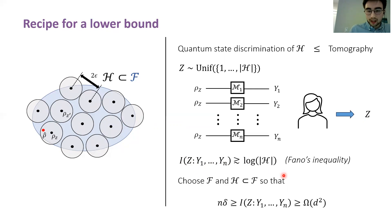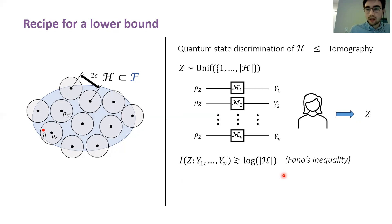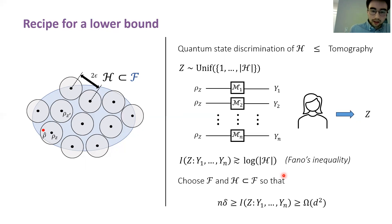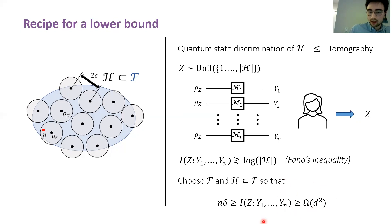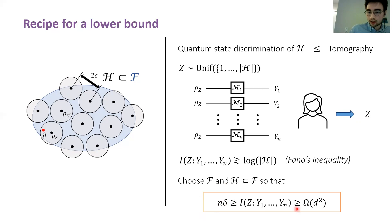A general method for lower bounds, colloquially known as Fano's method in the statistical learning literature, is the following: choose a family of states and a packing of that family so that the packing is large enough that the lower bound from Fano's inequality holds, and yet leads to mutual information which is upper bounded by some small constant delta times the number of copies of the state. This is what we'll show in the next few slides — let me focus on the lower bound first.